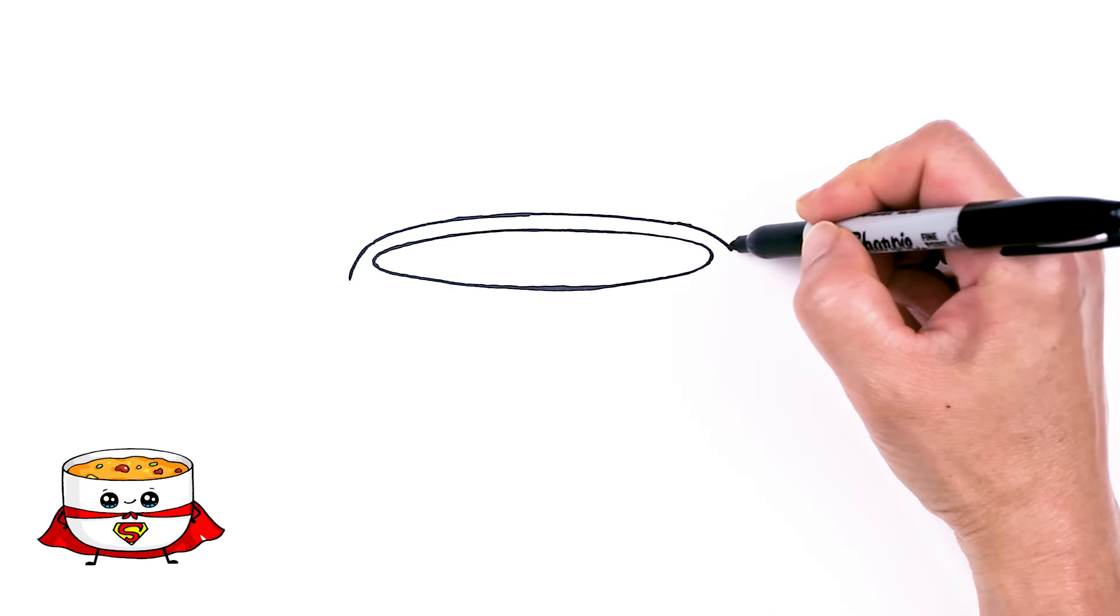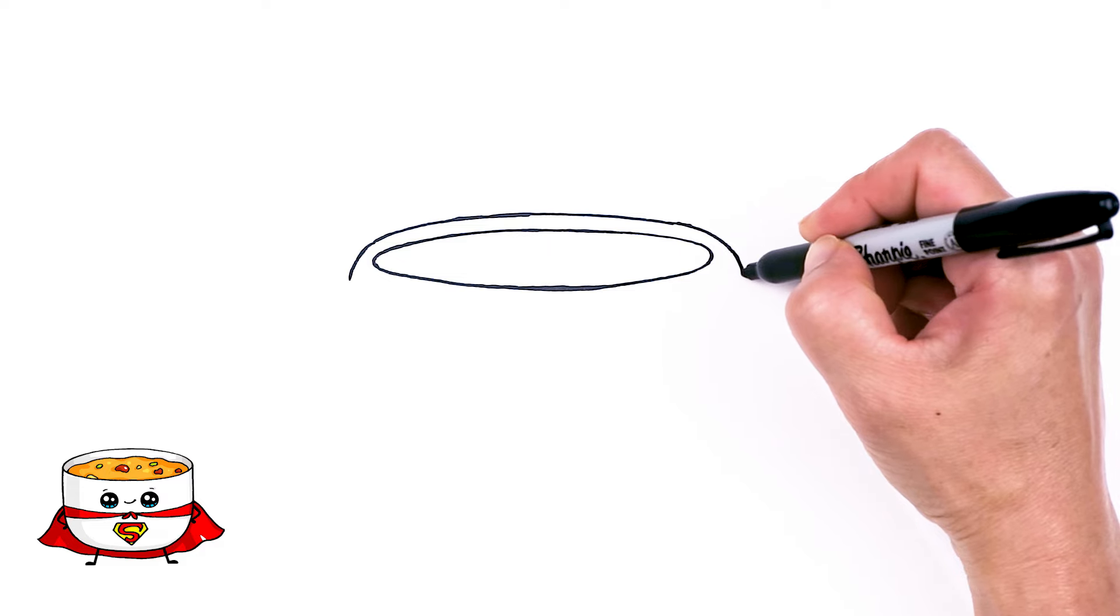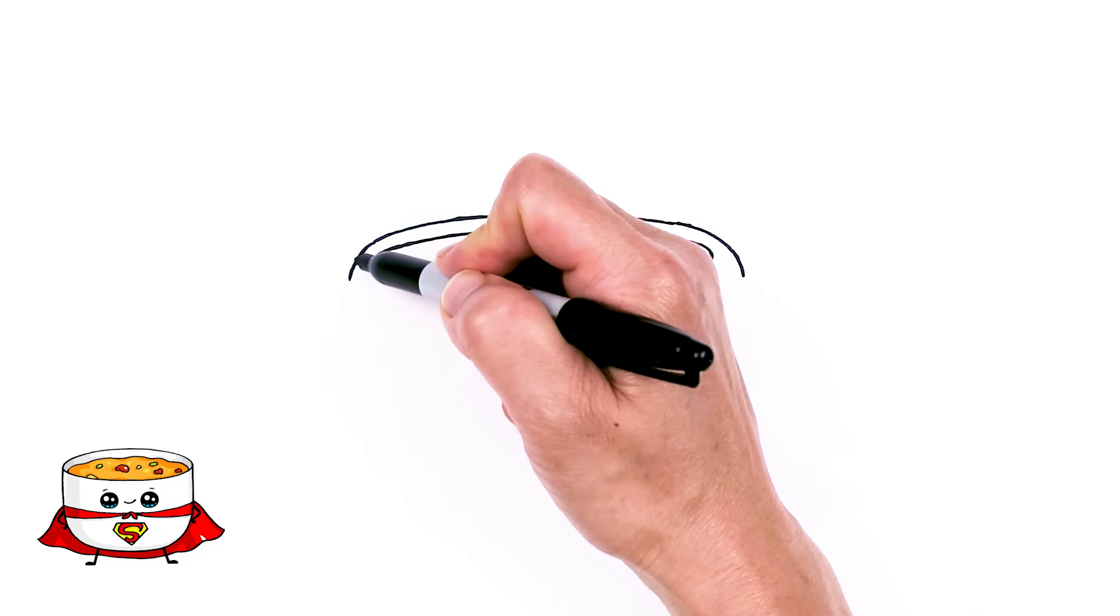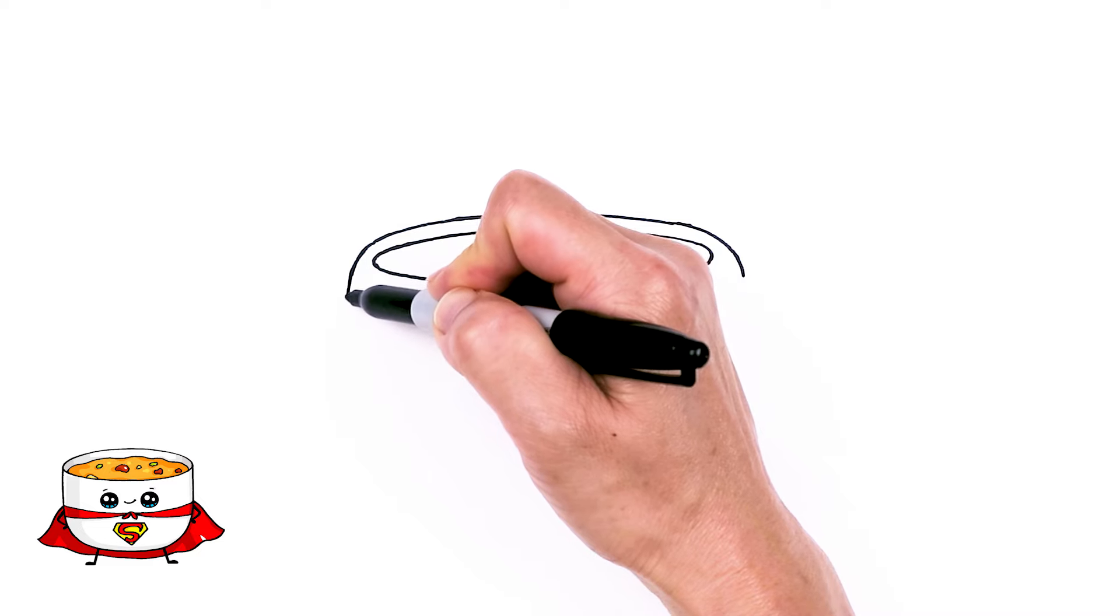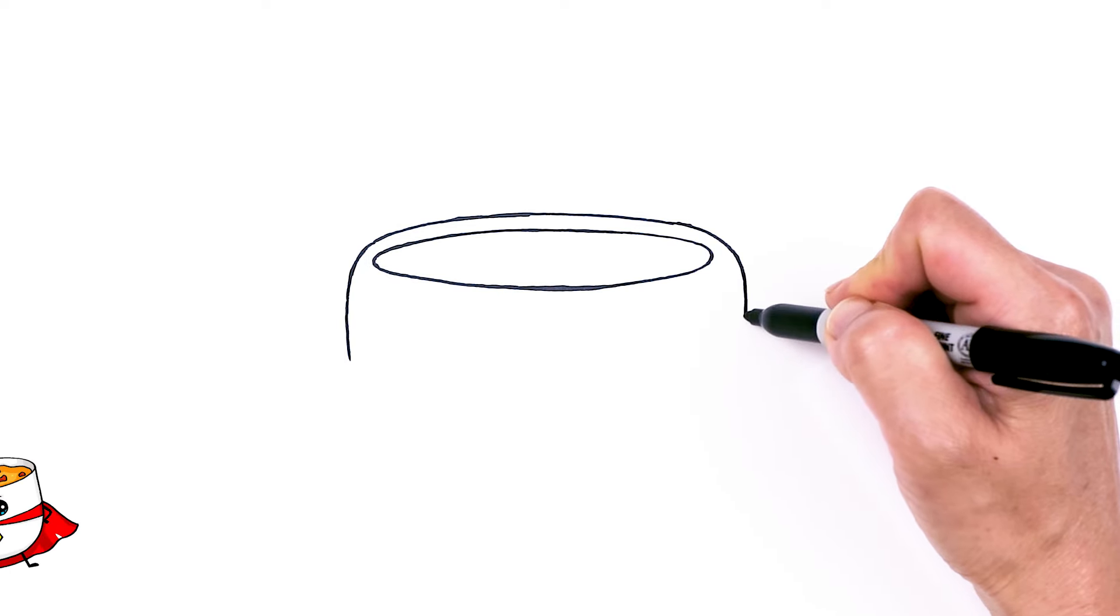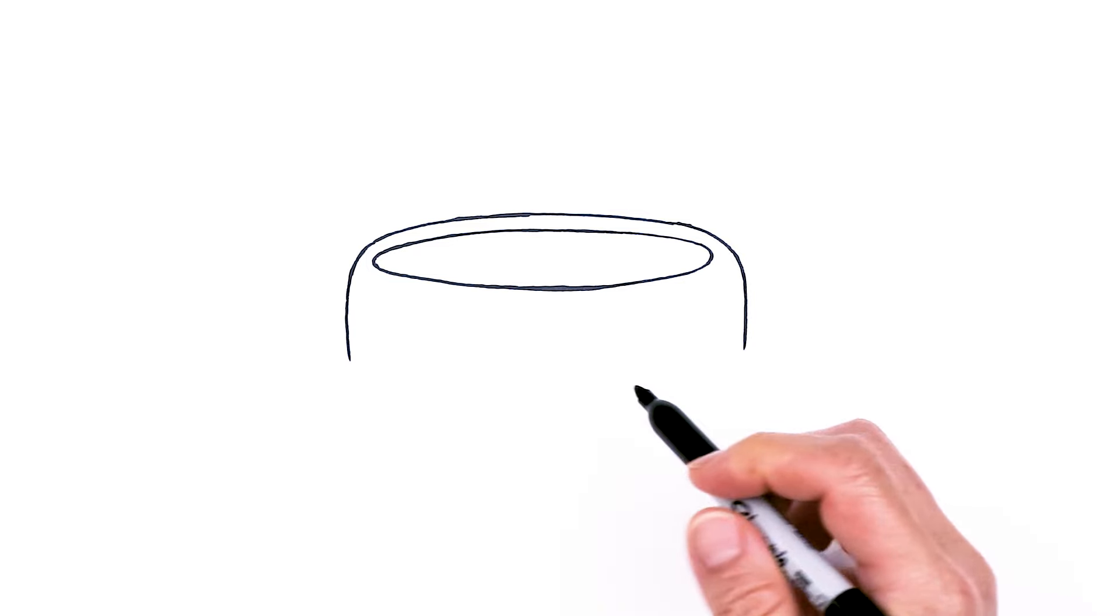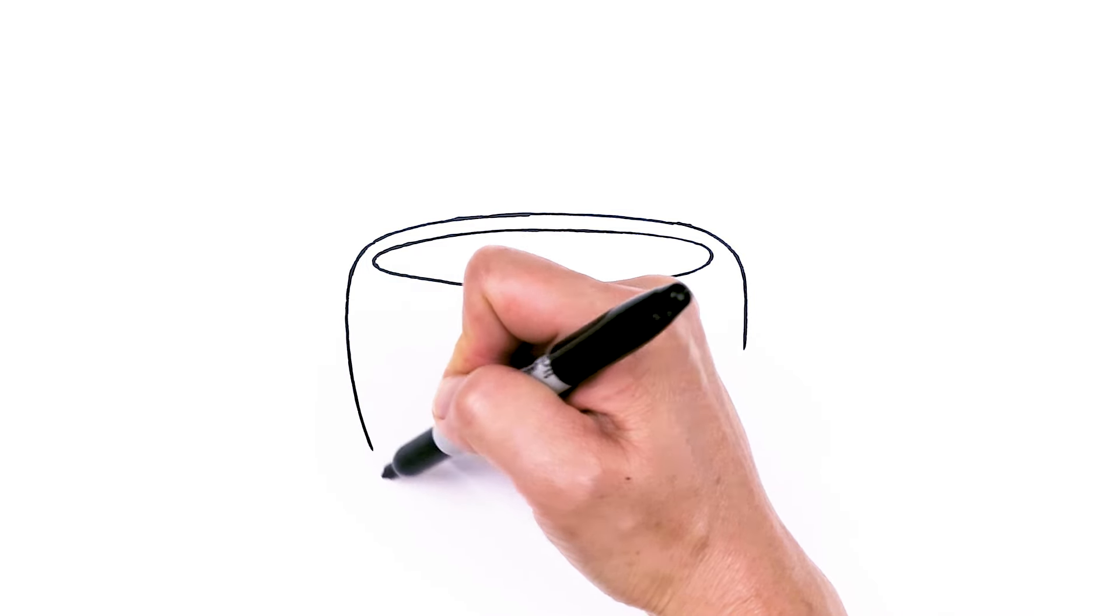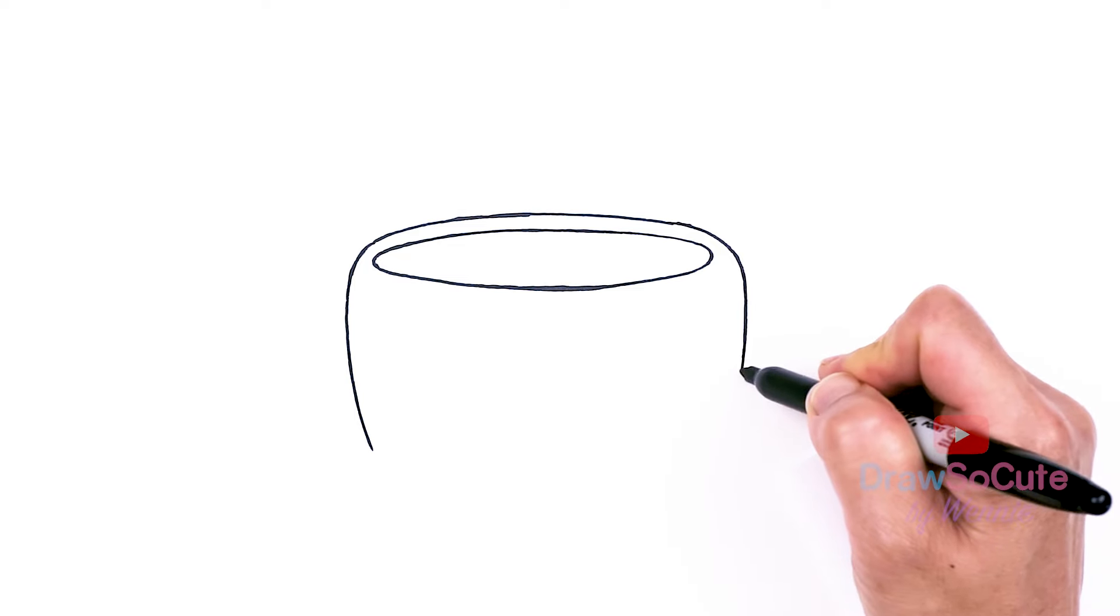Now we're going to start the edge of our cup. And then from there we're just going to bring down this mug. Come down, down. Same thing here. Okay, let's continue this. I'm just making a wide short mug just to make it extra cute.